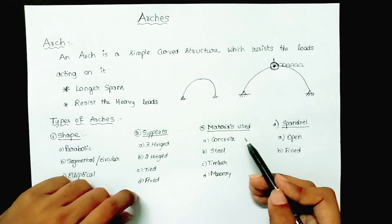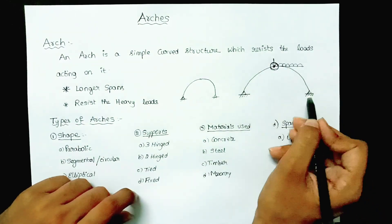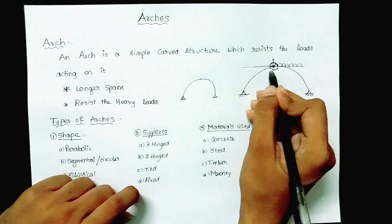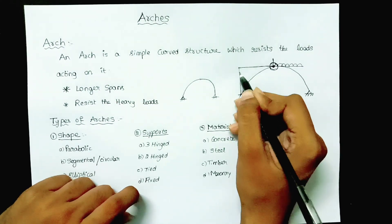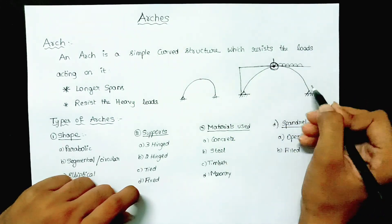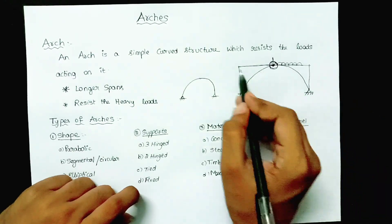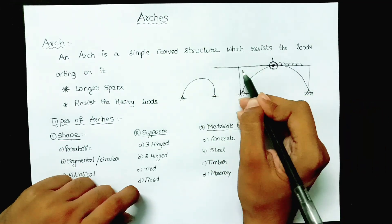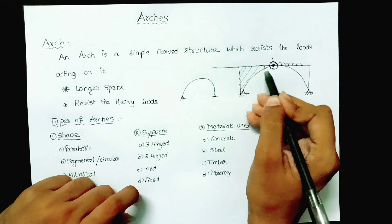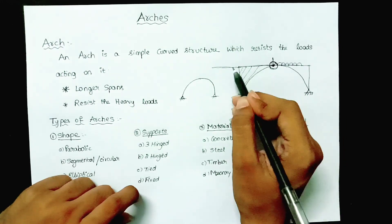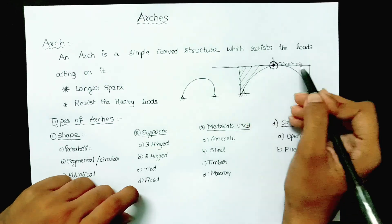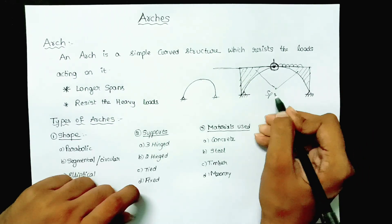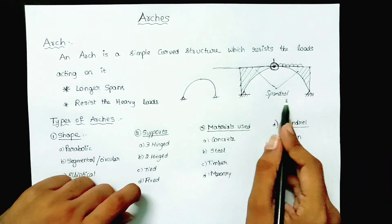Coming to the spandrel — for example, if you have an arch and you draw a horizontal line from one support to the other, and then the roadway or railway sits on top of the arch, the space between the arch and that path is known as the spandrel.